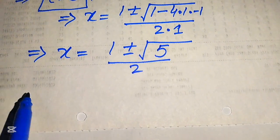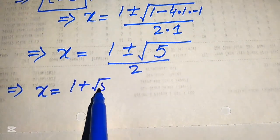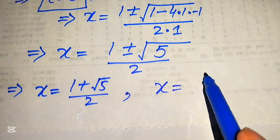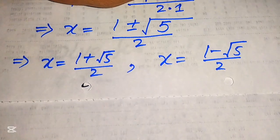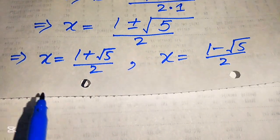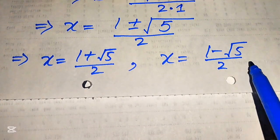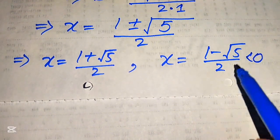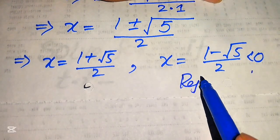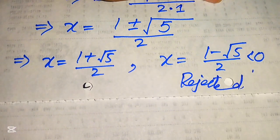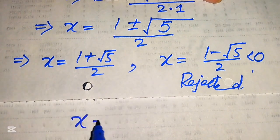This gives two values of x: x equals 1 plus square root of 5 divided by 2, and x equals 1 minus square root of 5 divided by 2. Because we are solving for positive values of x, the second value is negative and therefore less than zero, so we reject it. We proceed with x equals 1 plus square root of 5 divided by 2 only.